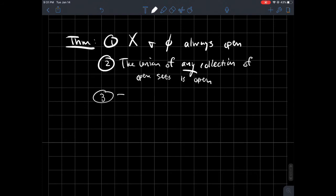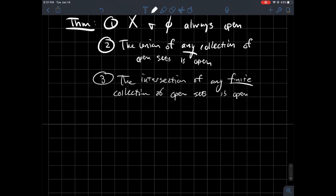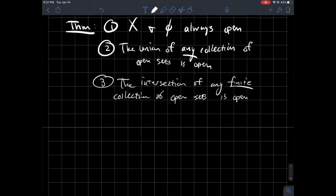And then the third thing: the intersection of finitely many, or another way to say that is any finite collection of open sets is open. So I'm going to demonstrate these three things.